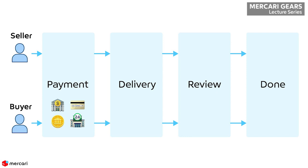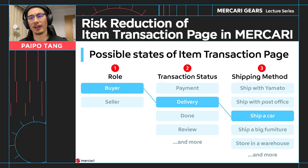For each transaction status, both buyers and sellers have some tasks to complete in order to move the transaction flow forward. Furthermore, when sellers try to send an item to a buyer, there are different delivery options. Medi-Kali cooperated with some third-party delivery companies such as Japan Post Office, Yamato, or even some warehouses, so depending on different shipping methods sellers choose, there are different procedures for them to send the item.